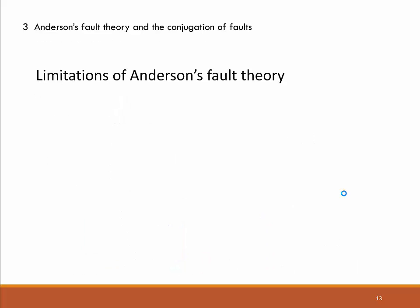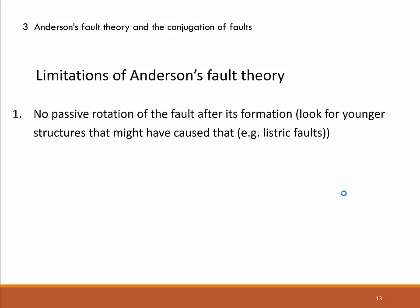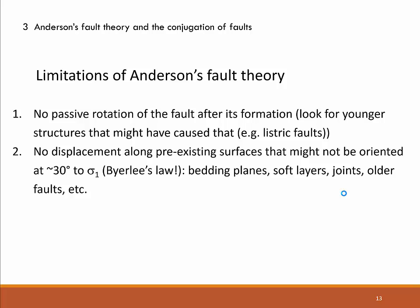Here are the key limitations of Anderson's fault theory. First, it only applies if no passive rotation of the fault after its formation has taken place — an Anderson-type fault that is later rotated will no longer be in the predicted orientation. We should therefore look for possible younger structures that might have caused such rotation. Listric faults — curved faults along which blocks rotate and slip, typically downward — are a common cause. Most listric faults are normal faults. Second, no displacement along pre-existing surfaces should have taken place, as discussed in the context of reverse faults reactivating normal faults.